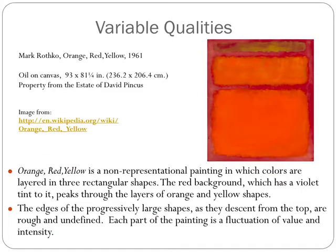Orange Red Yellow by Mark Rothko is a non-representational painting in which colors are layered in three rectangular shapes. The red background, which has a violet tint to it, peeks through the layers of orange and yellow shapes. The edges of the progressively large shapes, as they descend from the top, are rough and undefined. Each part of this painting is a fluctuation of value and intensity.